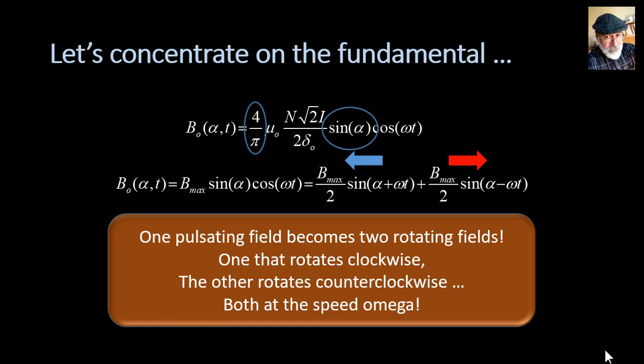And that is with one coil. Let me repeat. One pulsating field becomes two rotating fields. One that moves clockwise, the other counterclockwise, but both at the same speed, omega radians per second. What happens when we add two more coils?